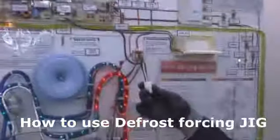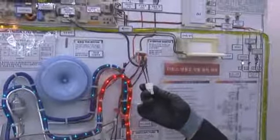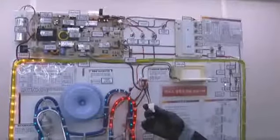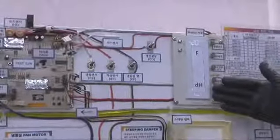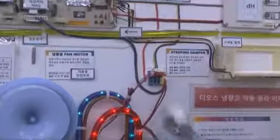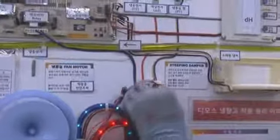Let us look at how to check the defrost error with the defrost forcing jig. When FDH error occurs, remove the defrost sensor and connect the defrost forcing jig.